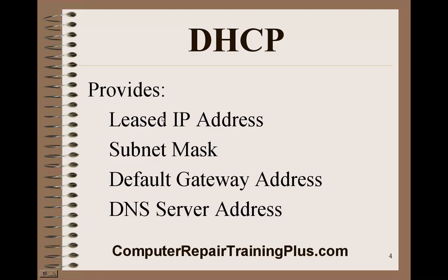What does DHCP provide? It provides a leased IP address — these leases can range from a few hours to a few days or even weeks, depending on your service provider. It also provides a subnet mask, so the computer knows what network it's on; a default gateway address, so the computer knows where to connect to the internet; and DNS server addresses. DNS, or Domain Name System, is where domain names are translated into IP addresses so the computer can connect.